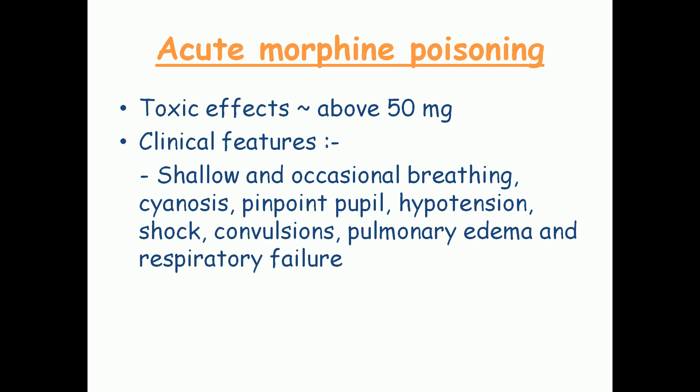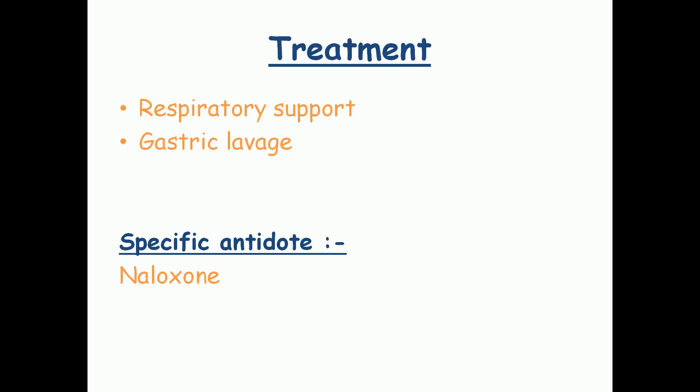Regarding acute morphine poisoning, toxic effects start to appear at doses above 50 mg, while the lethal dose is 250 mg. Clinical features include shallow and occasional breathing (due to inhibition of respiratory centers), cyanosis, pinpoint pupils (miosis), hypotension (due to inhibition of the vasomotor center and release of histamine causing vasodilation), shock, convulsions, pulmonary edema, and finally respiratory failure. Most deaths associated with morphine poisoning are due to respiratory failure.